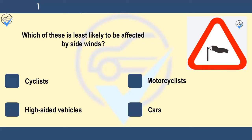Which of these is least likely to be affected by side winds? Cyclists, motorcyclists, high-sided vehicles, or cars. Although cars are the least likely to be affected, side winds can take anyone by surprise. This is most likely to happen after overtaking a large vehicle, when passing gaps between hedges or buildings, and on exposed sections of road.